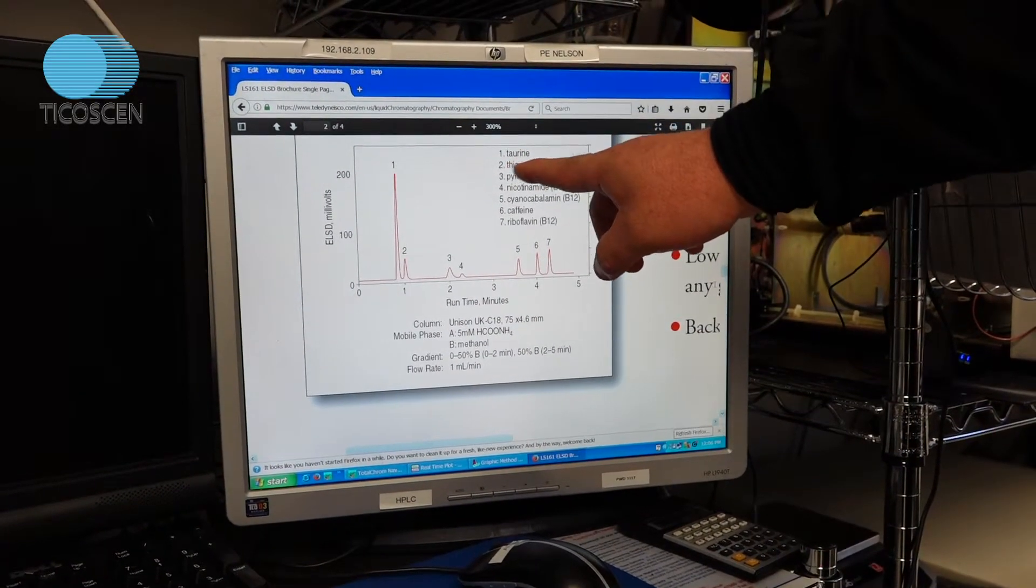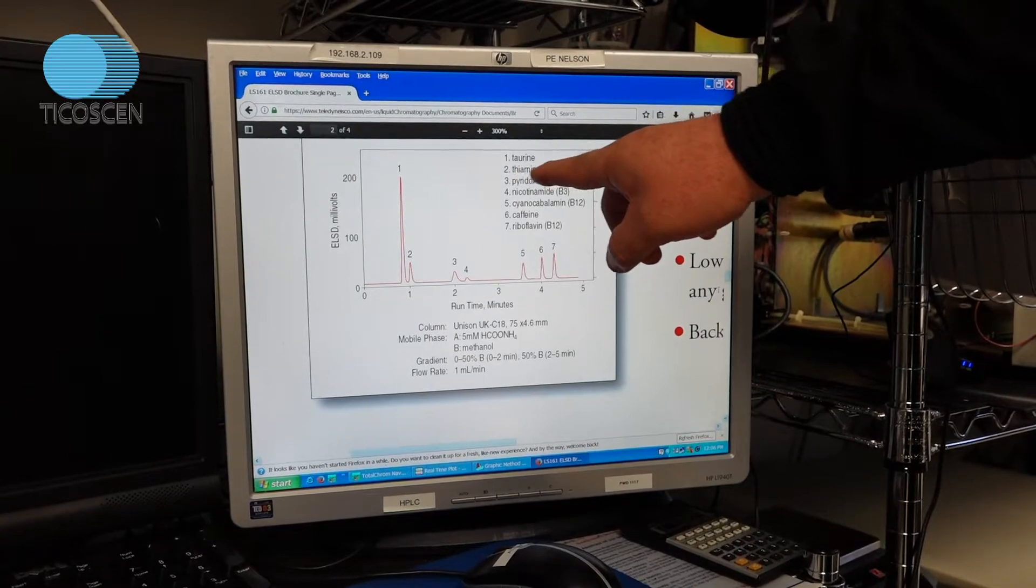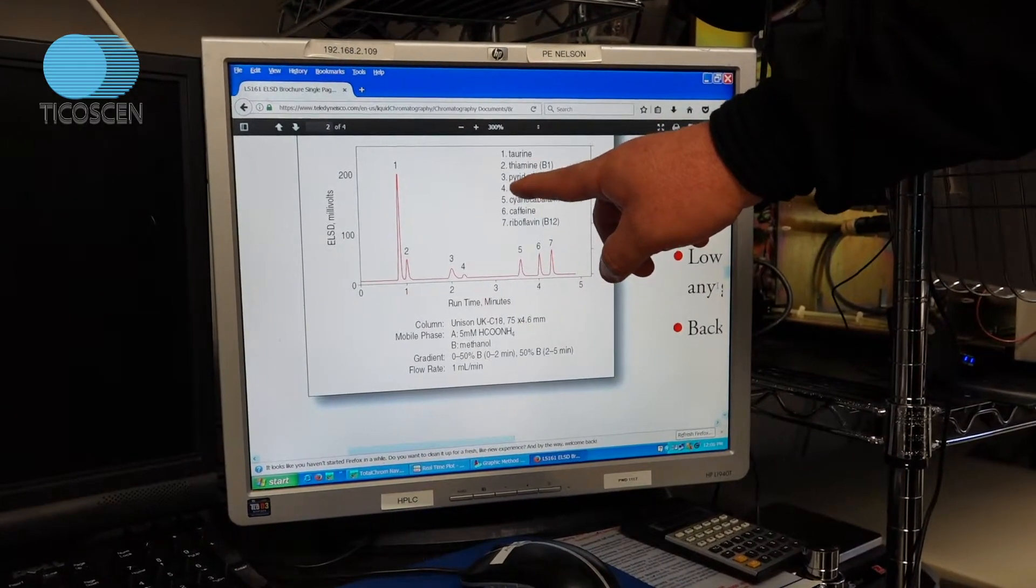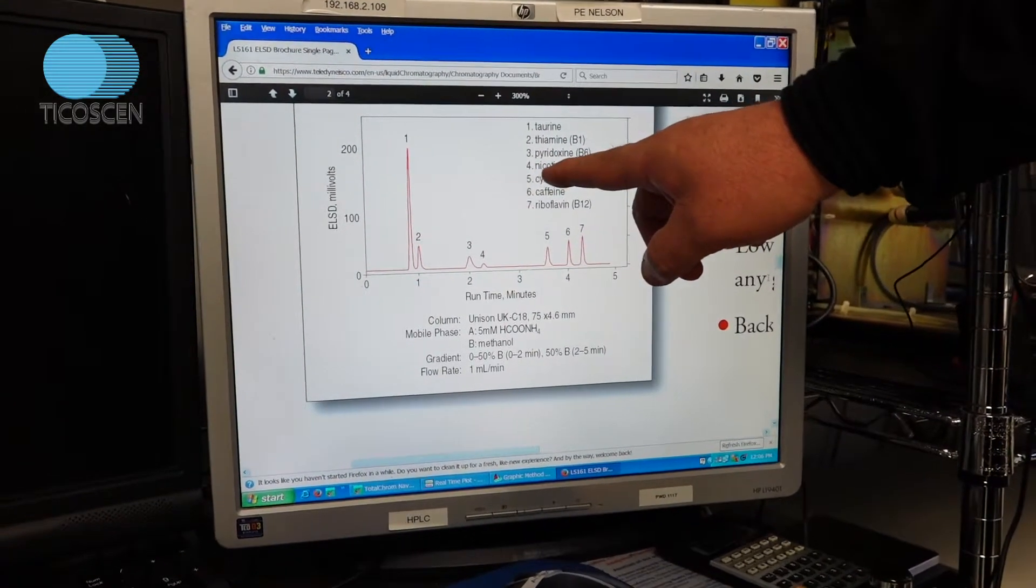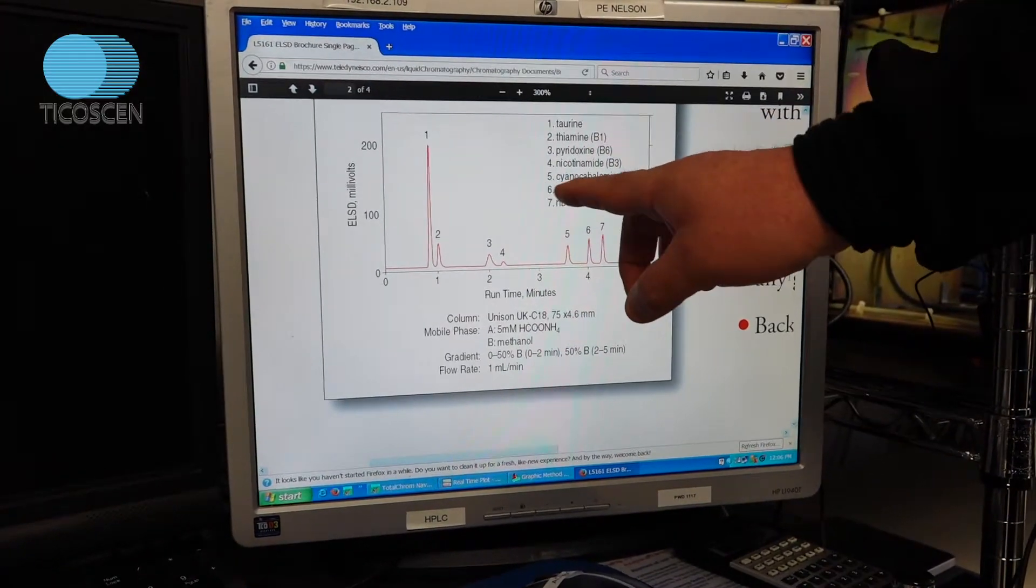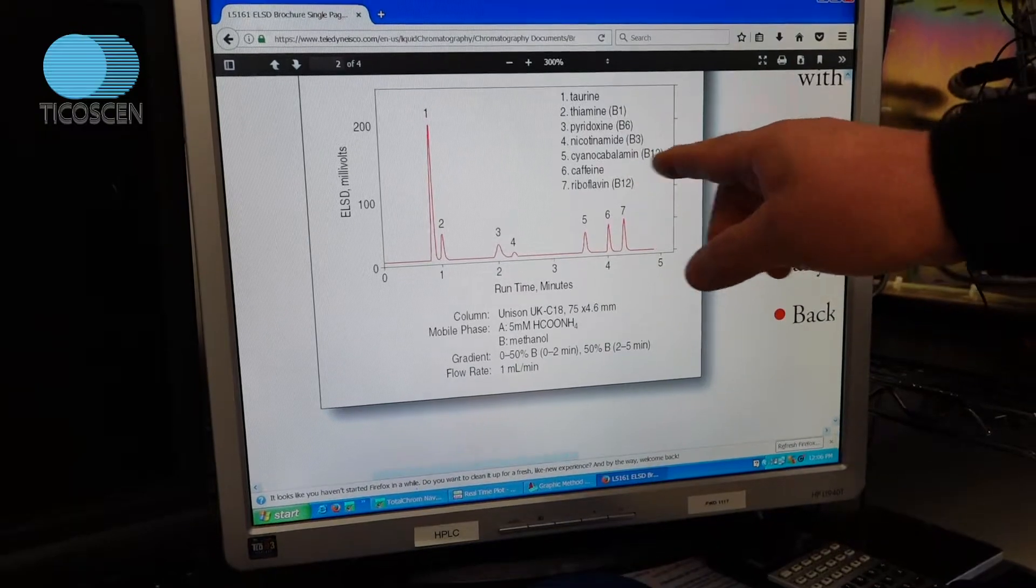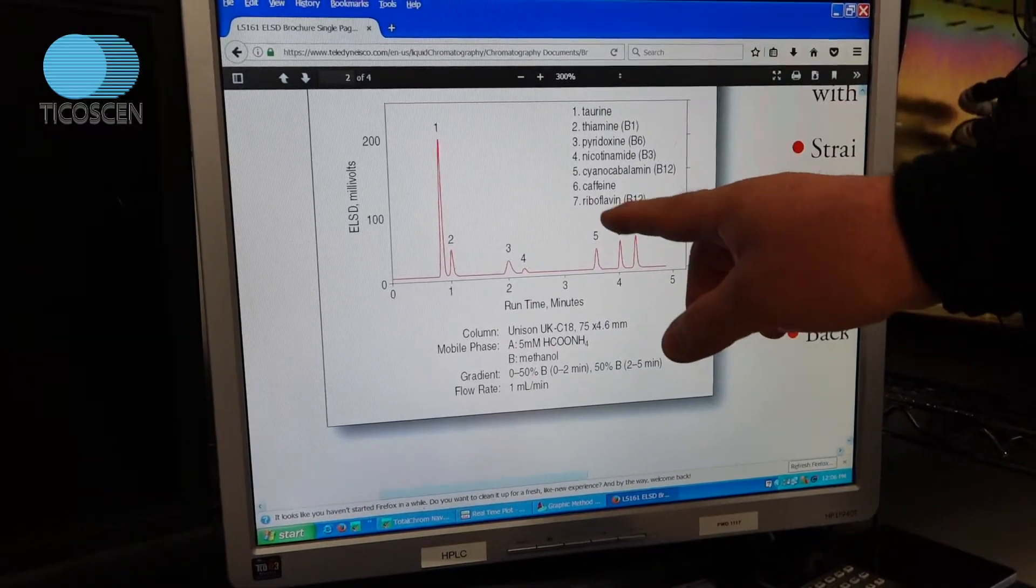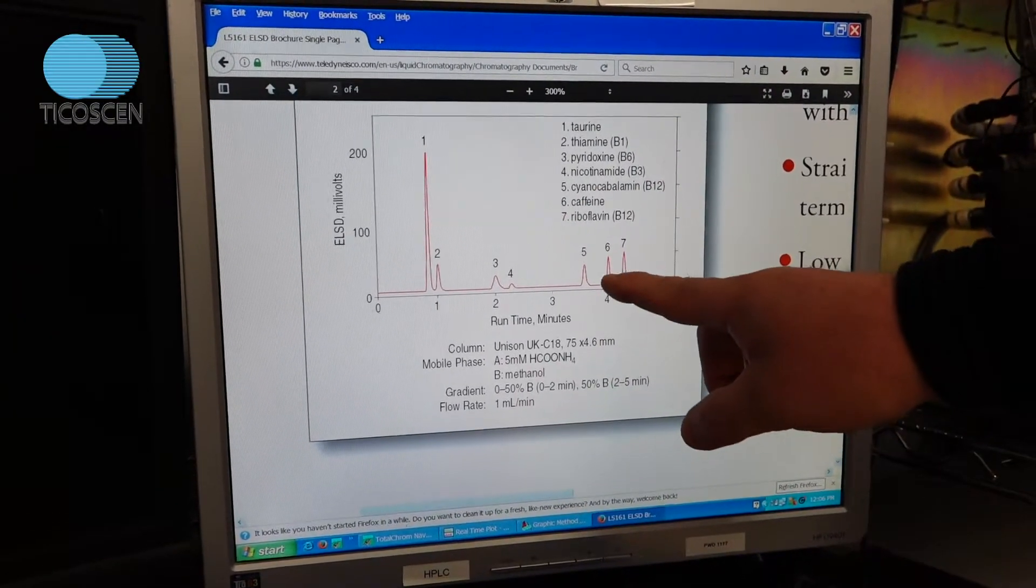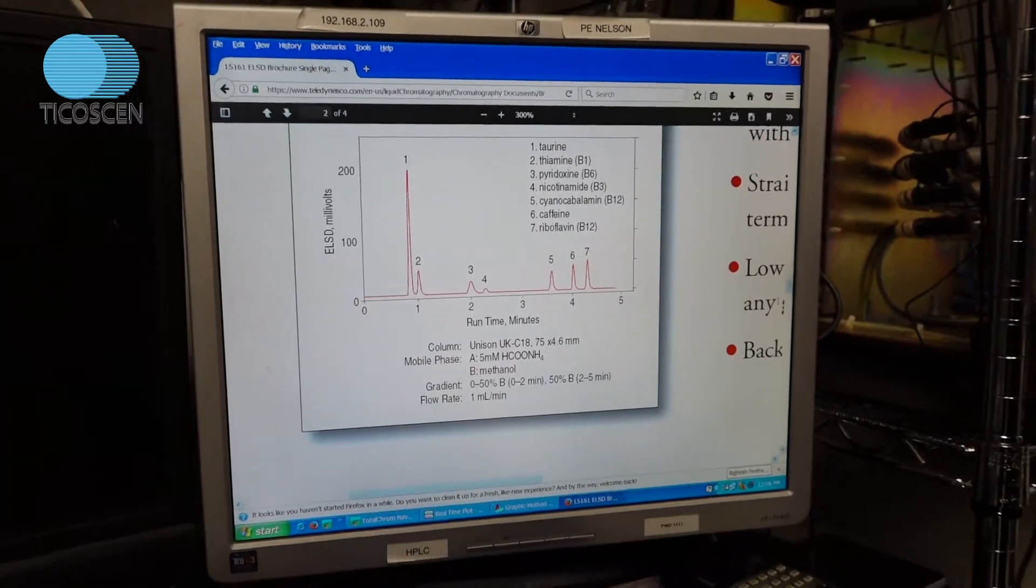The first peak is taurine, second peak is thiamine, third peak is pyridoxine, third is nicotinamide, five is cyanocabalamin, B12 vitamins. These are obviously vitamin analysis. And six is caffeine peak. And this seven is riboflavin.